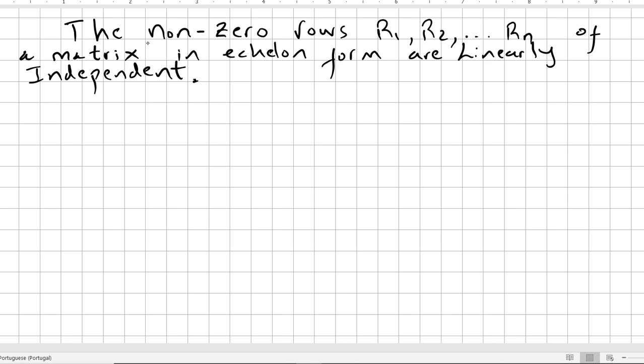So we have another theorem. This time we have this one: the non-zero rows R1, R2, ..., Rn of a matrix in echelon form are linearly independent.